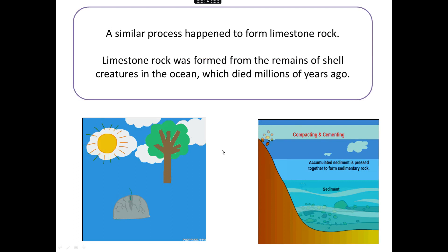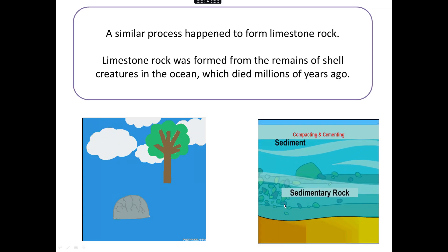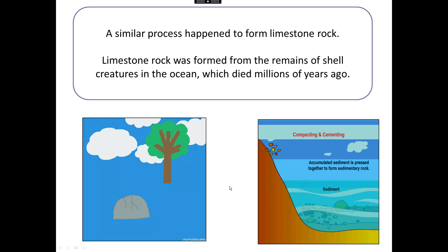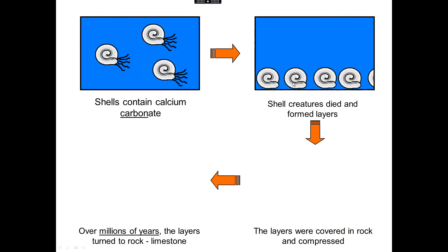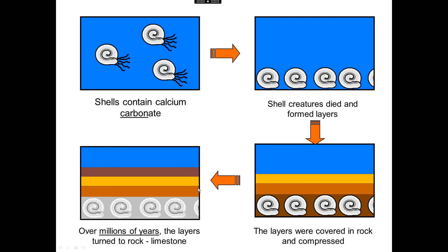Limestone rock is formed from a similar process, but instead of any old sea creatures, it was specifically shell creatures in the oceans. The remains of the shell creatures got laid down in the ground in a layer, the layers built up over time, then the weight of the layers presses down and compresses them. Over millions of years, the layers turned to limestone rock. Limestone is a sedimentary rock made from shell creatures that died millions of years ago. The reason this involves carbon and carbon dioxide is because the shells contained calcium carbonate, which originally came from carbon dioxide dissolved in seawater. So that carbon dioxide made its way from the air into the oceans, into the shells of the sea creatures, and then got trapped in the limestone rock over millions of years.